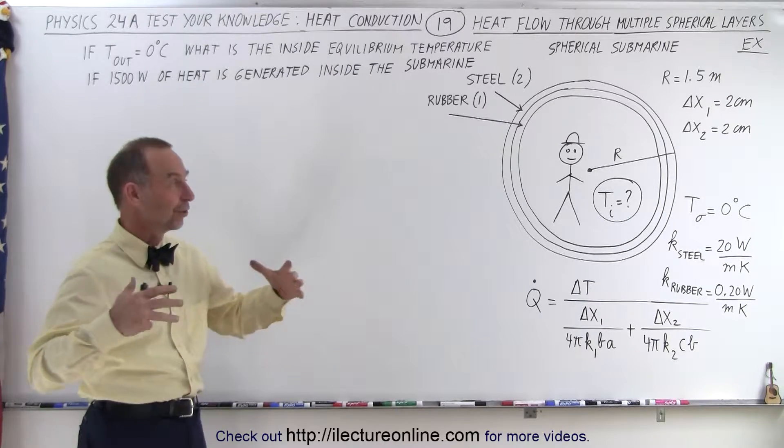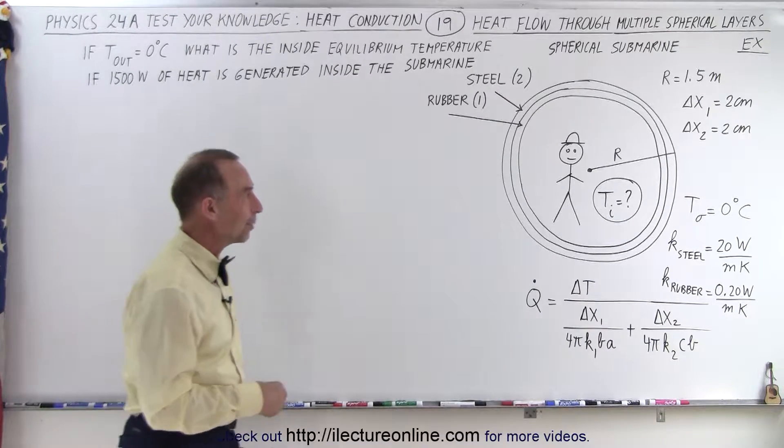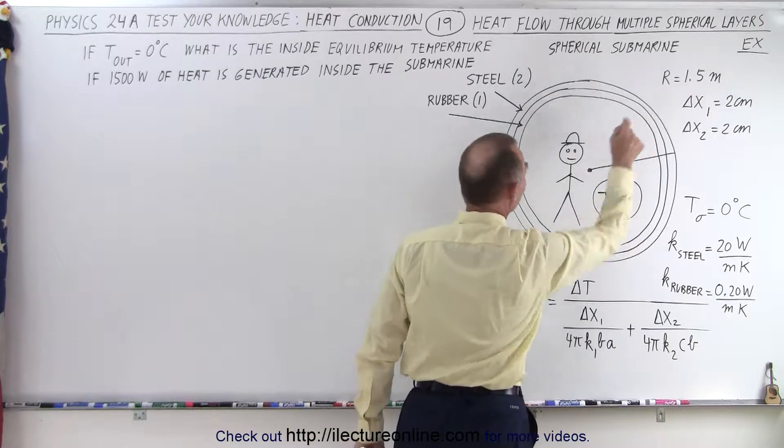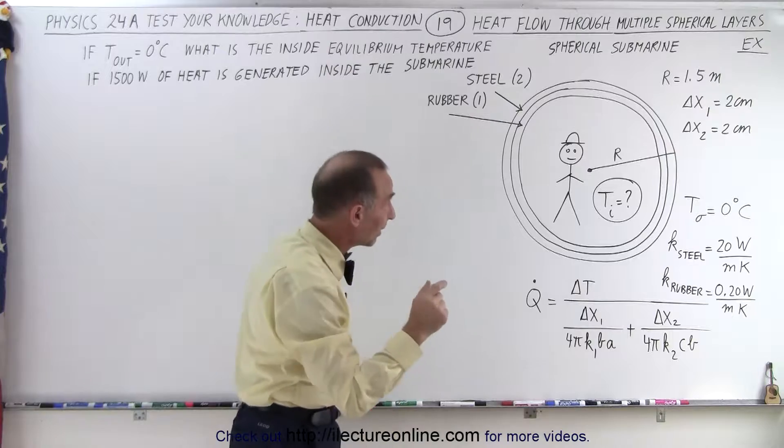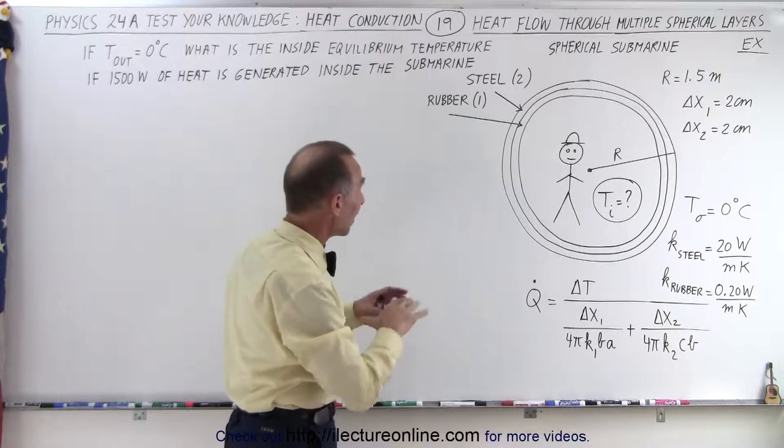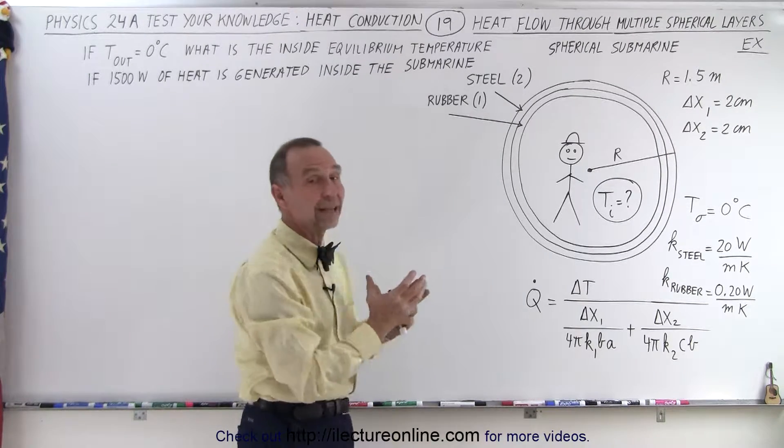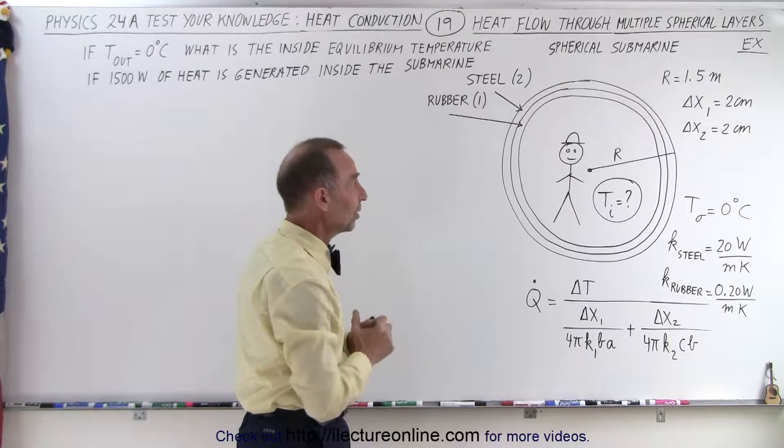We have a spherical submarine. The outer radius of it is 1.5 meters. It has a steel rim that's not 10 but 2 centimeters thick. And we have a rubber insulated material that is also 2 centimeters thick.